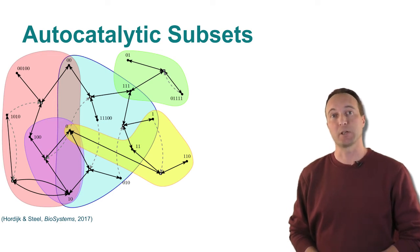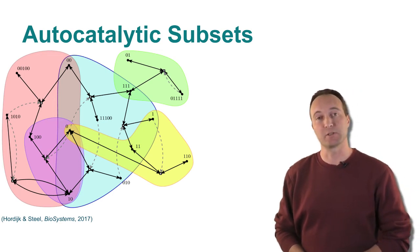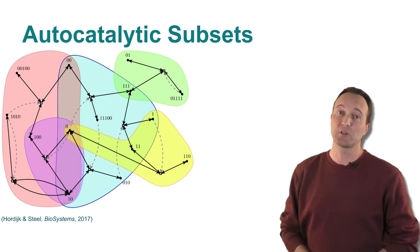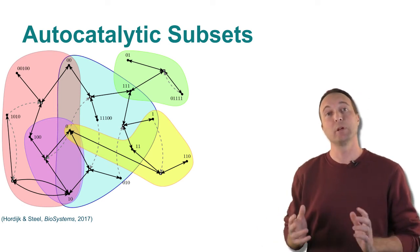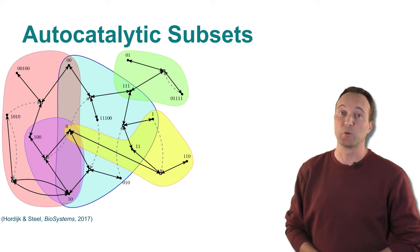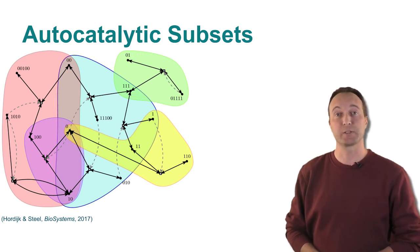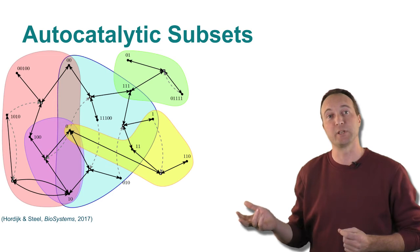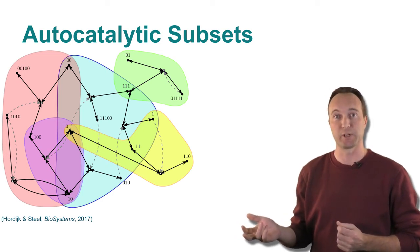This hierarchical subset structure can enable the existence of different types of protocells. Imagine two compartments formed, for example, by lipid membranes, which have been shown to form, grow and divide spontaneously under appropriate circumstances. Now assume that the same chemistry can take place in both of these compartments, but in one of them only the red autocatalytic subset is currently present, and in the other one only the blue autocatalytic subset.